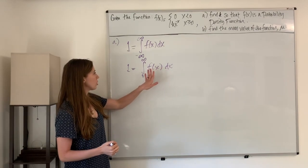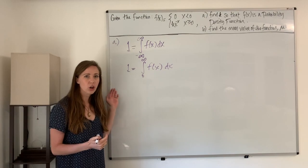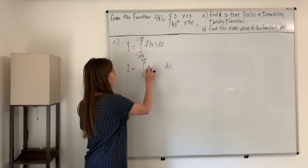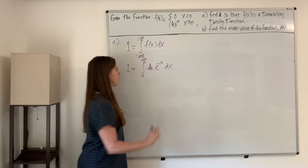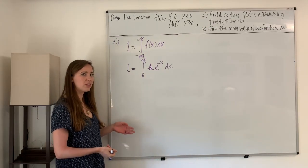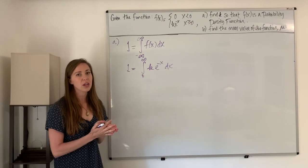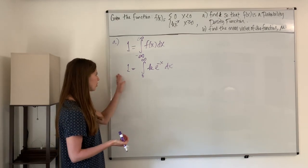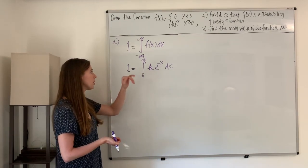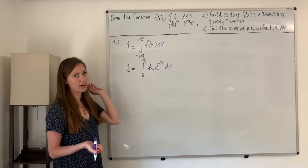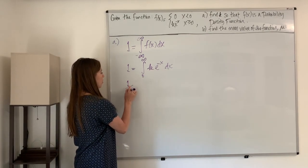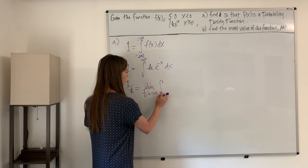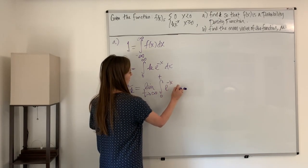Now we write our function in here and solve. Our function is k times e to the negative x. When we look at this integral, the first thing we should notice is that we have an infinite bound. So in order to integrate this, we're going to have to use improper integration. Recognizing that this is an improper integral, and that k is a constant we can pull out, we rewrite this as one over k equals the limit as t approaches infinity of the integral from zero to t of e to the negative x dx.